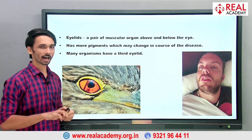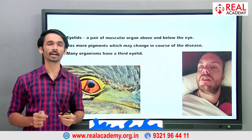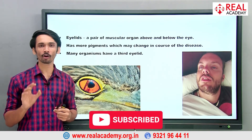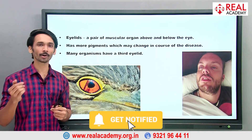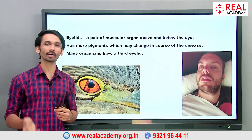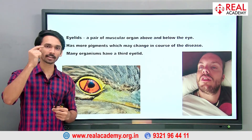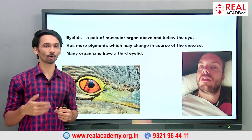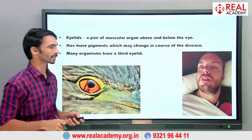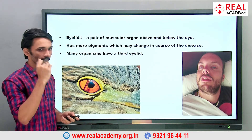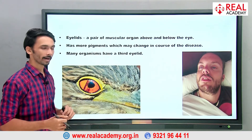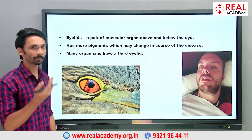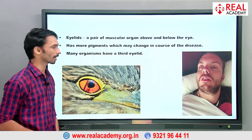Our eyes have something over them called eyelids. Eyelids are voluntary muscles — muscles controlled by our brain. Therefore we can control when to close our eyes and when not to. Eyelids have pigments, and those pigments can change in the course of disease, giving your eyelids some color.